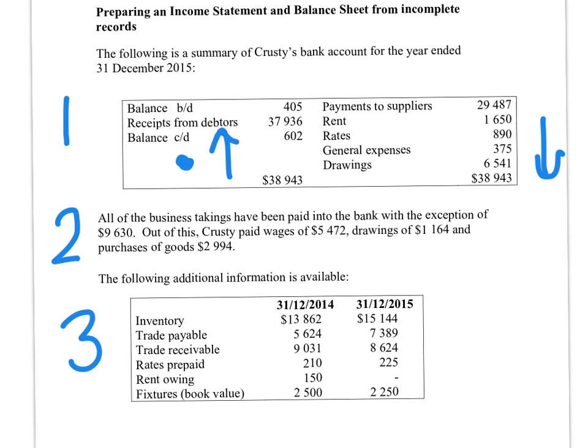There is some additional information numbered two, which often has some impact on your calculations. Section three contains last year's and this year's figures — last year's on the left, this year's on the right. This list includes assets and liabilities for both years, allowing you to prepare a balance sheet and to calculate the opening capital using last year's figures.